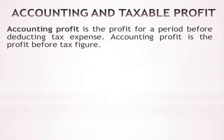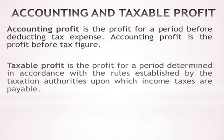Taxable profit is the profit for a period determined in accordance with the rules established by the taxation authorities, upon which income taxes are payable. So taxable profit is basically the profit calculated using tax rules, and on which we calculate our tax. The reason we need to know both is that current tax is charged on taxable profits, not accounting profits.